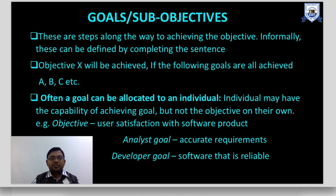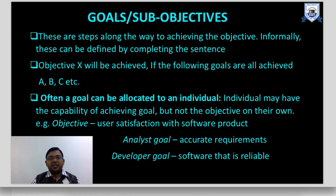Goals and sub-objectives are steps along the way to achieving the objective. This can be defined by completing the sentence: 'Objective X will be achieved if the following goals are all achieved.' For example, software should be of good quality if the developer follows the specific quality standard, the testing team follows the specific quality standard, and the requirement engineers also follow specific standards.